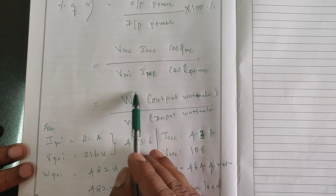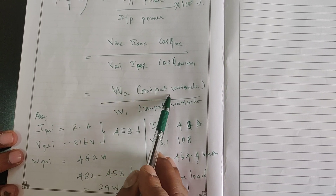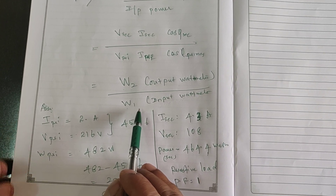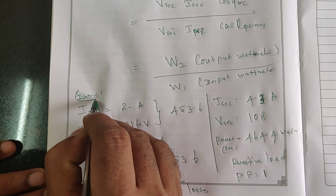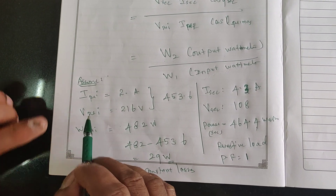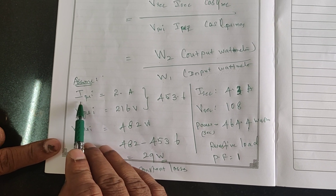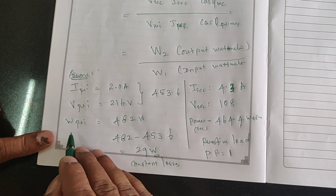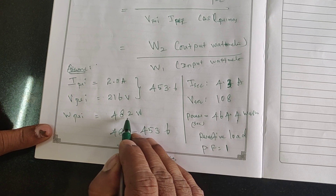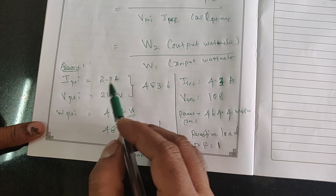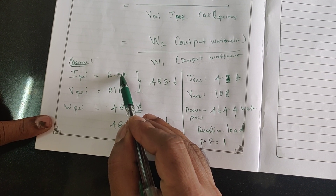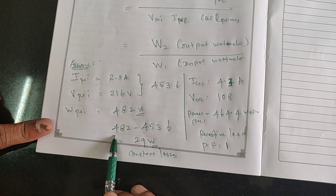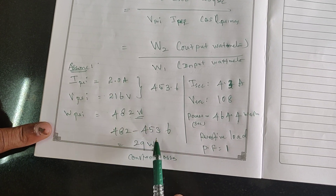Alternatively, we can use wattmeter readings directly: W2 is the wattmeter on the secondary (output) side and W1 is the wattmeter on the primary (input) side. If you know the wattmeter reading directly, then we can find the efficiency of the transformer. For example, the practical reading taken: primary current = 2 amperes, primary voltage = 216 volts, and the primary power from the wattmeter = 482 watts. But the product 216 × 2 = 432 — so you might ask why there is a difference. The actual wattmeter reading is 482, while the ammeter and voltmeter product gives 453.